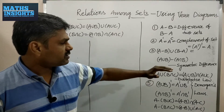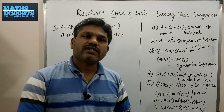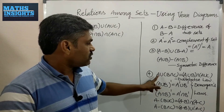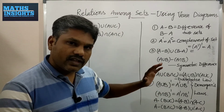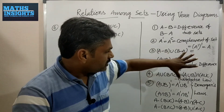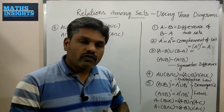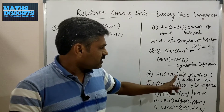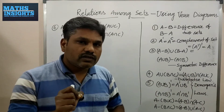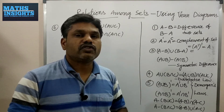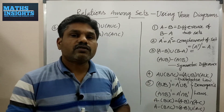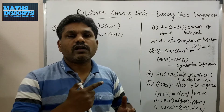The fourth law is the distributive law: A∪(B∩C) equals (A∪B)∩(A∪C). We will show the area for the LHS and then for the RHS, and conclude that both areas are the same, thus proving the law. Students often confuse associative and distributive laws — in distributive laws you have both union and intersection, while in associative laws you have either union or intersection throughout.